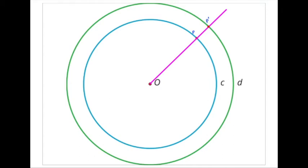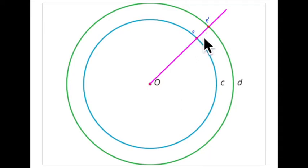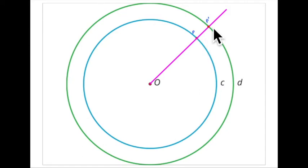This is practice problem number one for lesson two. You're supposed to realize that point O is the center of dilation, place a point P on circle C, and then show where P goes if an image of P is dilated to D. That's on a straight line from O to P — you just continue that line to D and you get to P prime.